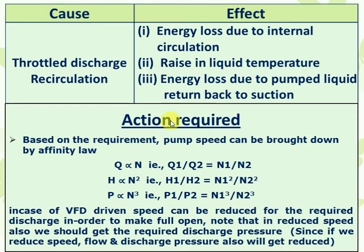In this process of reducing speed, we should keep in mind that head is also directly proportional to the square of speed. So if we reduce the speed, discharge flow will come down and discharge head and discharge pressure will also come down. We should not let the discharge pressure go below the requirement — for example, if the pump is operating at 5 bar and the requirement is 4 bar, reducing speed should not bring it below 4 bar. We can then calculate the power difference, and the difference between both powers is our gain, which can be easily calculated using the affinity law formula.